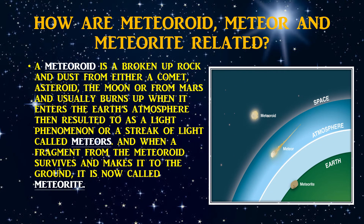How are meteoroid, meteor, and meteorite related? A meteoroid is broken-up rock and dust from either a comet, asteroid, the moon, or from Mars. It usually burns up when it enters the Earth's atmosphere, resulting in a light phenomenon or a string of light called a meteor. And when a fragment from the meteoroid survives and makes it to the ground, it is now called a meteorite.